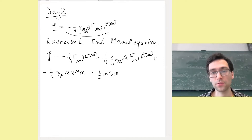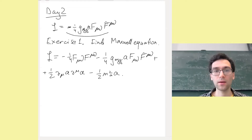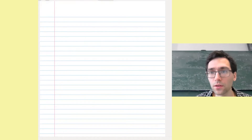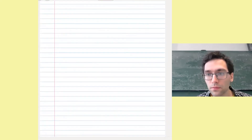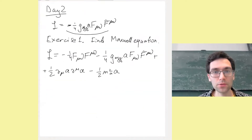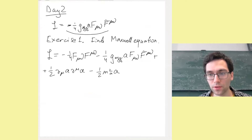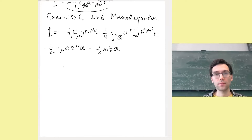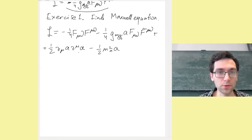We also include minus one-half m² a² as the mass term for the axion. As you remember from the lectures, the axion is a pseudo-Nambu-Goldstone boson that gets its mass from quantum QCD effects — instanton effects. Now we want to find the equations of motion. We write the Lagrangian and integrate by parts.